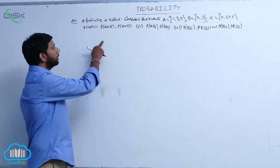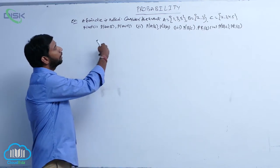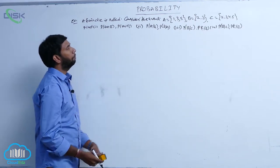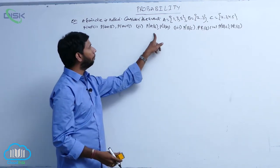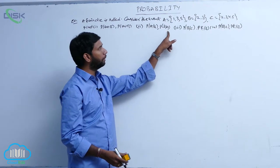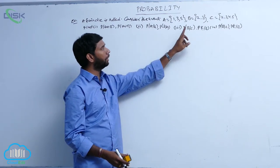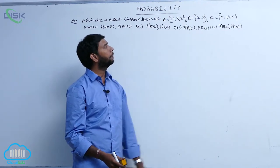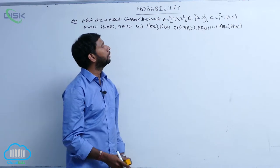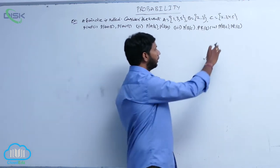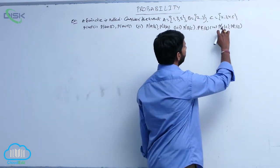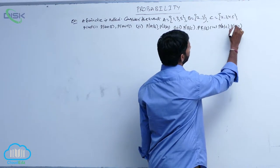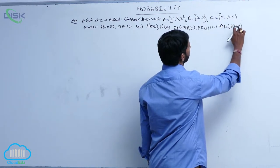Find P of A intersection B, P of A union B, P of A given B, P of B given A, P of B given C, P of C given B, P of A given C, and P of C given A.